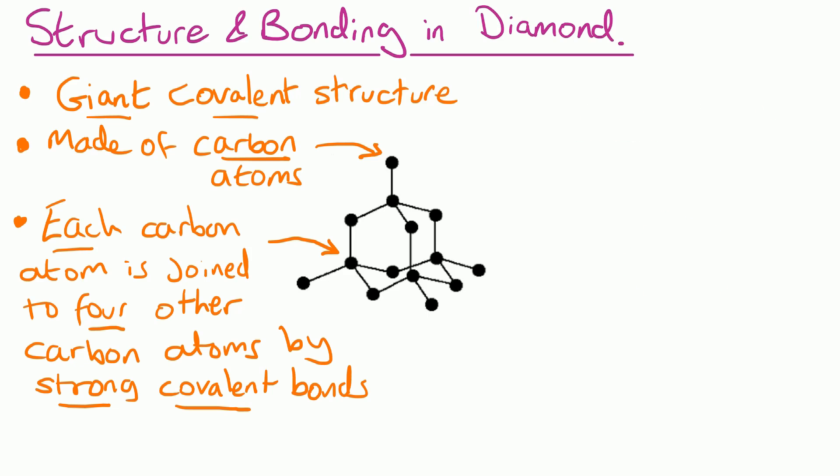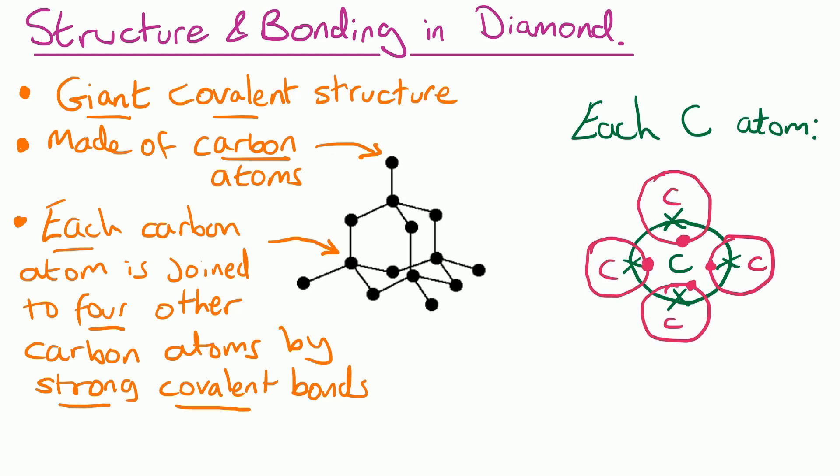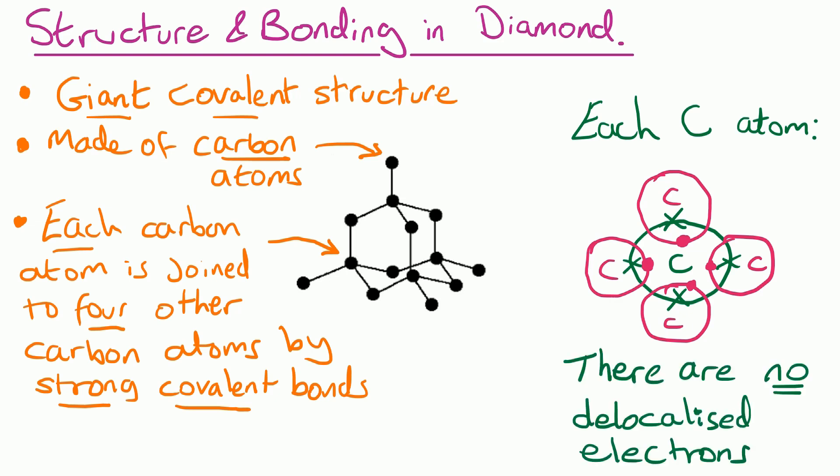Don't make the common mistake of saying there are four covalent bonds in diamond — what you really mean is each carbon atom makes four covalent bonds. If we look at one carbon atom, it's in group four, so it's got four electrons in the outer shell. That shell needs eight to be full to make the carbon atom stable, so it shares electrons with four other carbon atoms. That means all of those outer shell electrons are involved in bonding, and there are no spare or free electrons that can move around. So in diamond, we say there are no delocalized electrons.